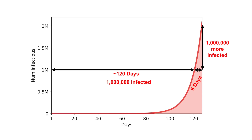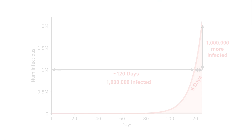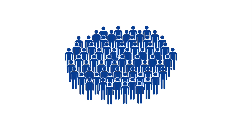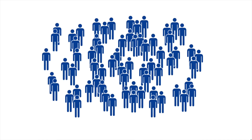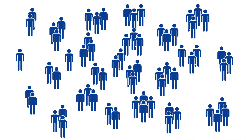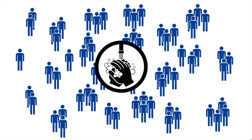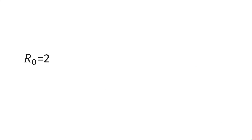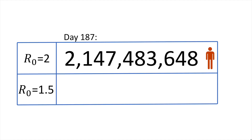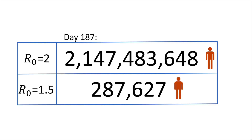And although it took about one hundred and twenty days to get our first million patients, the second million only took six more days — and so on. This type of growth will quickly overwhelm any medical system. In order to slow the growth, it's useful to reduce the number of susceptible people that a sick person might meet, using social distancing measures like staying home and closing schools. Hygiene measures like hand washing reduce the chance that a susceptible person will actually be infected when they meet a sick person. Even small changes in social distancing and in the rate of infection can have a dramatic impact. Suppose instead of an average of two new infections per sick person, we could get that down to an average of one and a half — the number of sick people at day 187 would only be about 287,000. Much more manageable.